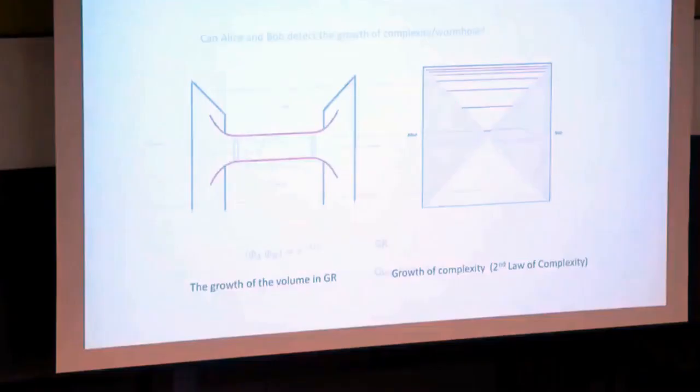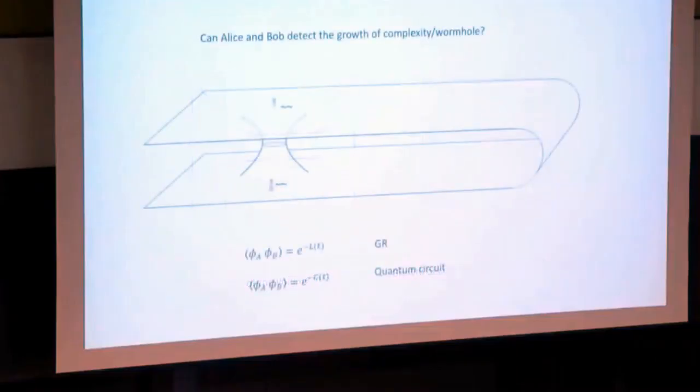Can Alice and Bob measure the fact that the complexity is increasing of their wormhole? Yeah, they can. Here's what they have to do.